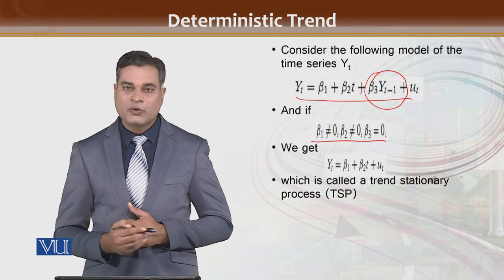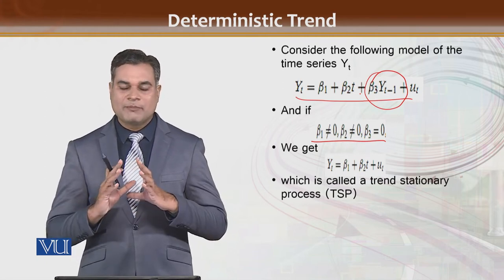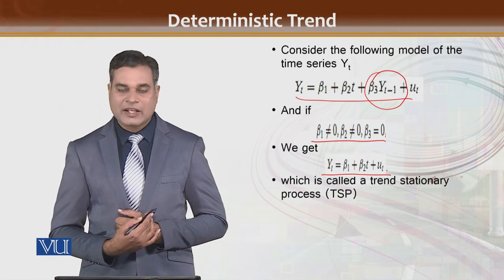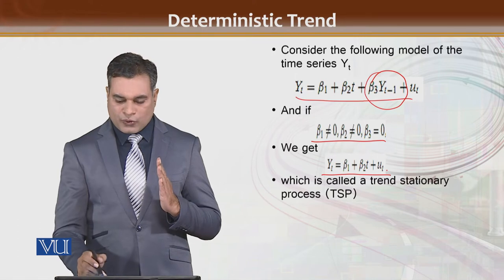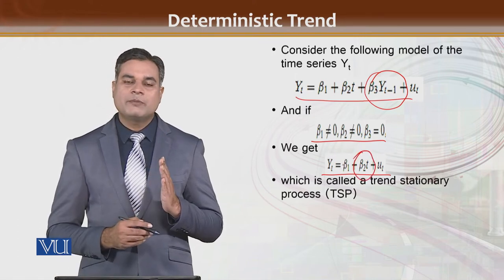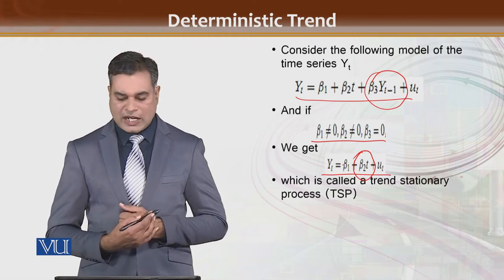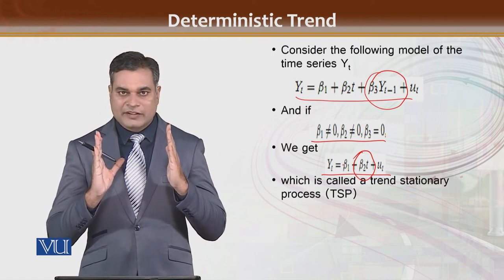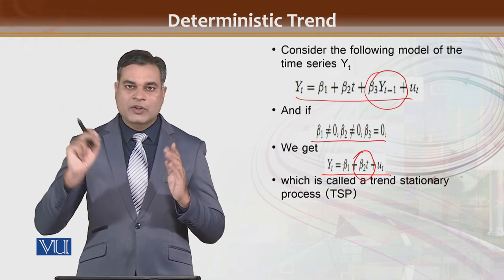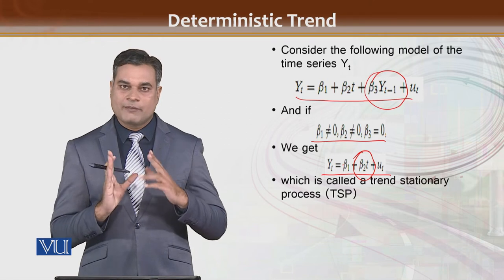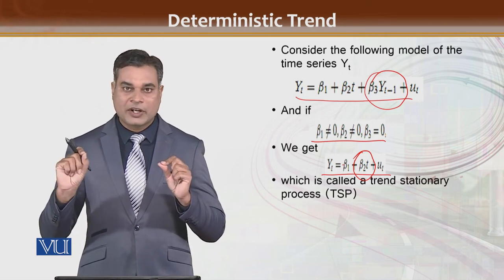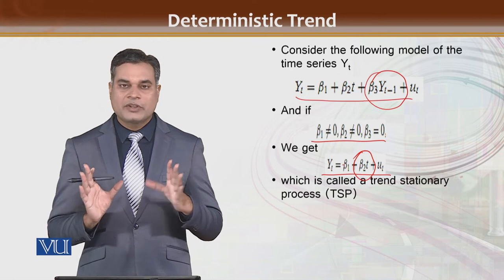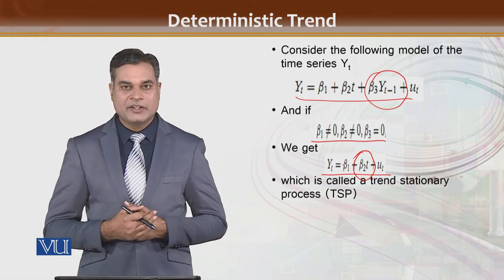Toh jis waqt beta 3 is equal to 0, yt minus 1 ki term drop ho jati hai — yt = beta 1 + beta 2t + error term. It means aapki jo series hai, it is only depending on the time — that with the passage of time ye kis tarah change ho rahi hai. Aur jis waqt with the passage of time ye change hoti hai, toh isko hum keh saktay hain ke aapki jo series hai woh non-stationary hai. Non-stationary ki do types hoti hain: ek pure random walk, ek random walk with trend, aur ek only deterministic trend — value only depending on the time period.